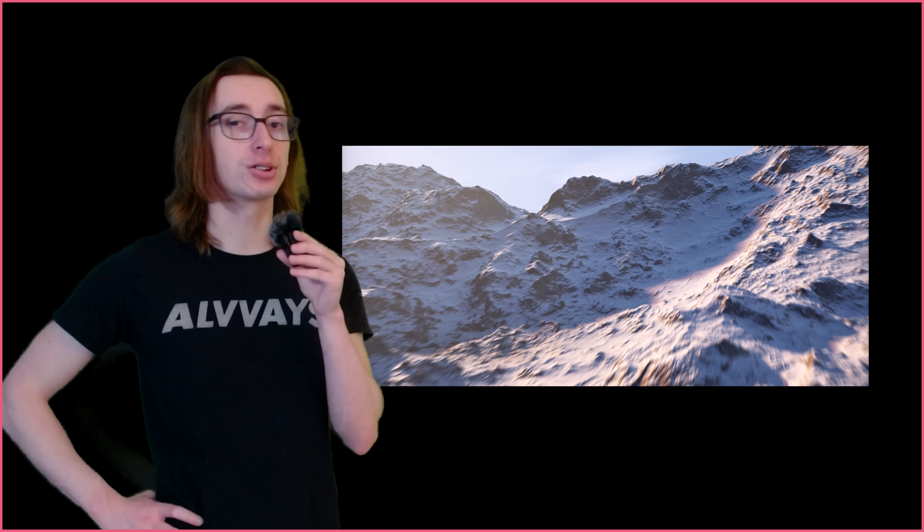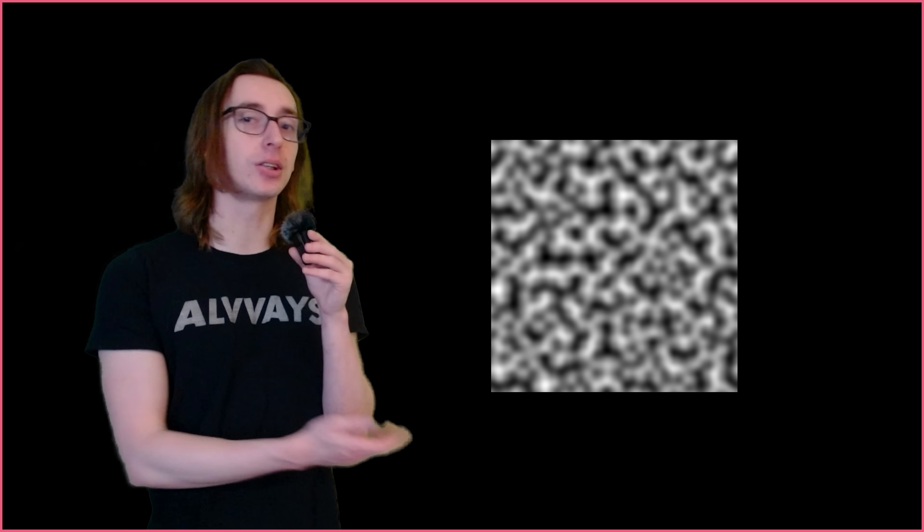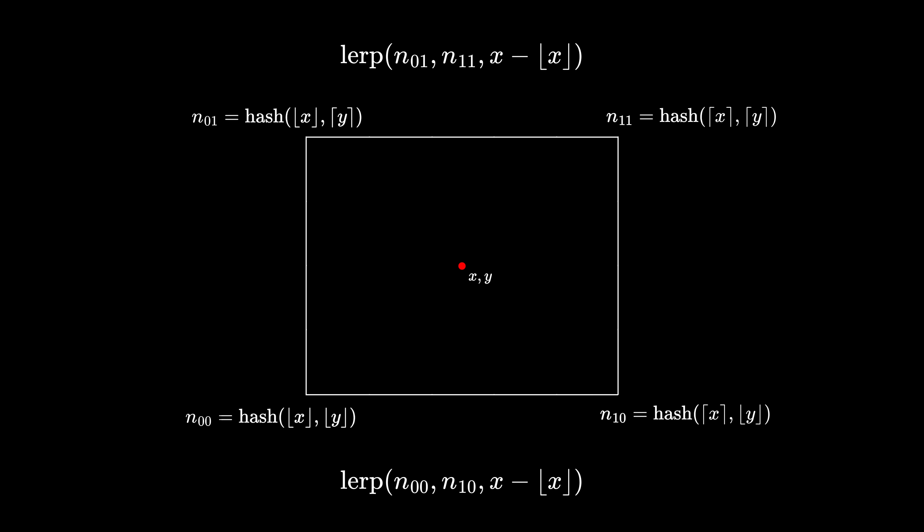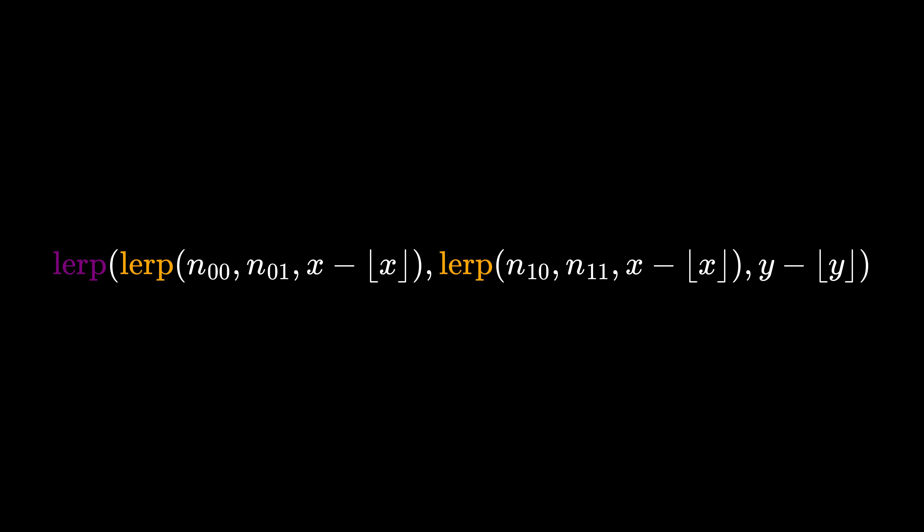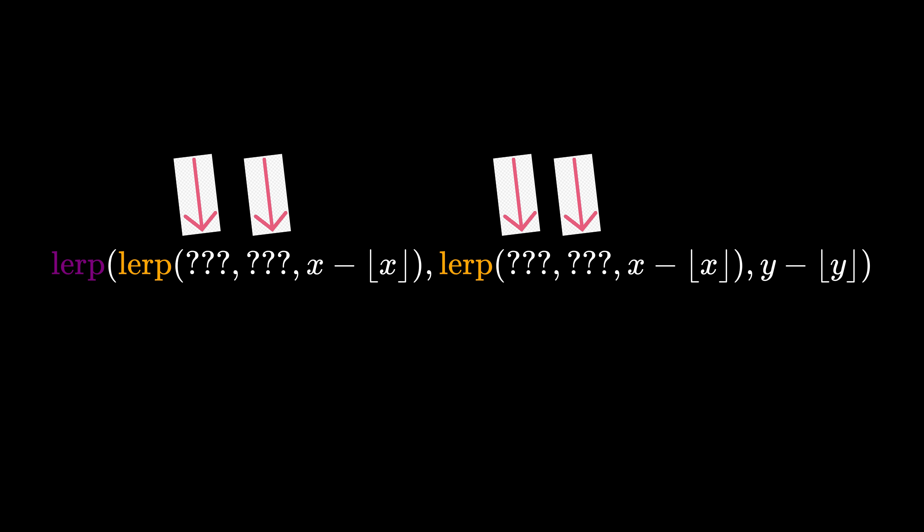Now that we understand value noise, we can finally move on to perlin noise. I mentioned earlier that perlin noise and value noise are siblings. That's because they're both based on the lattice structure we've become familiar with. This means that they both construct their output in the same way, with the bilinear interpolation of four different values. Where they differ though is how the values to be blended are obtained.